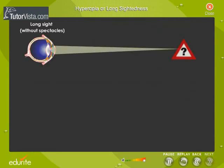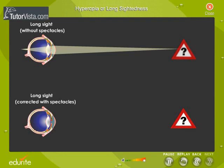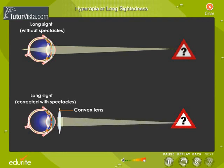In the first diagram, a person with Hyperopia or Hypermetropia sees a blurred image of a near object. The defect can be corrected by using spectacles with a convex lens of suitable focal length to get a clear image, as seen in the second diagram.